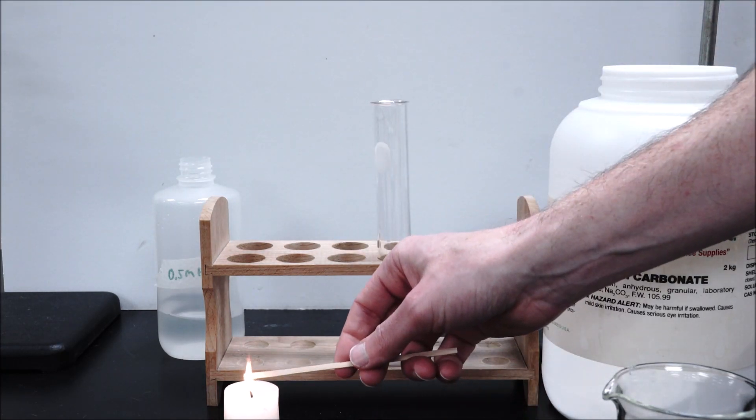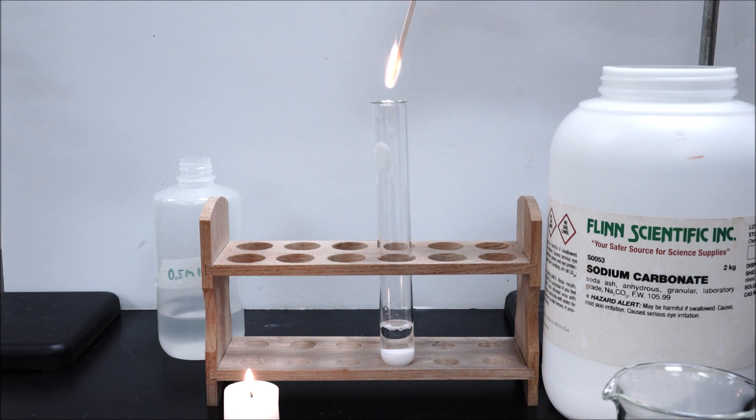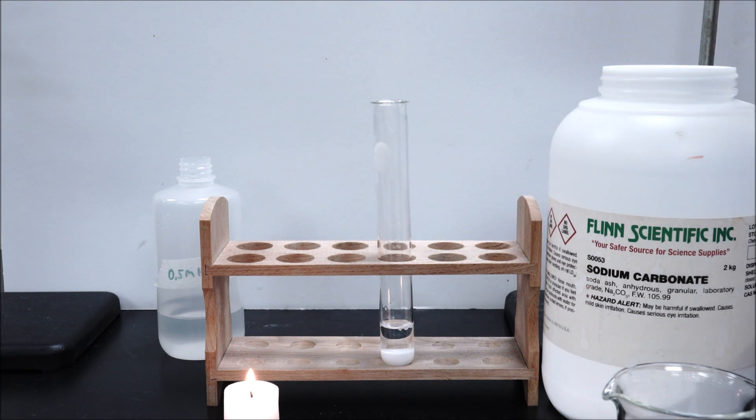In a splint test we take a splint, ignite it, and put it in to see what happens. And there are different things that can happen to a splint, but in this case we see that that splint gets extinguished, which tells us that that gas was carbon dioxide.